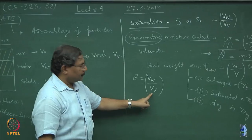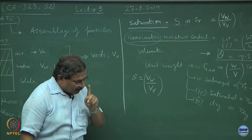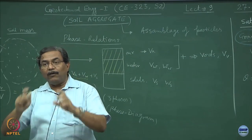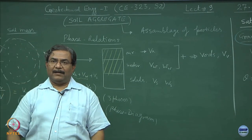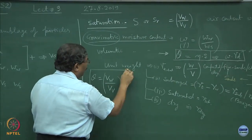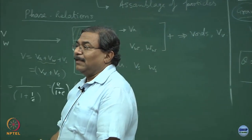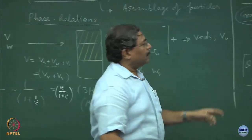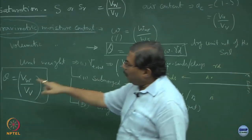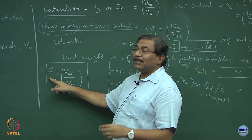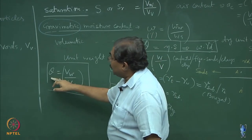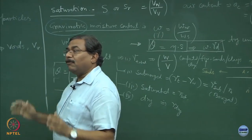A student asked whether the formulas for saturation and theta are the same. Please remember: volumetric moisture content is always defined as volume of water present in volume of voids. Gravimetric means you weigh everything; volumetric means you measure volumes. Volumetric moisture content cannot be weighed — it must be measured volumetrically.